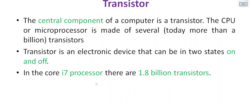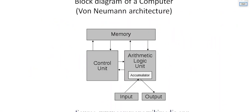There are a huge number of transistors in a computer's CPU. For example, an i7 processor has approximately 1.8 billion transistors. This is the block diagram of a computer — the Von Neumann architecture, taken as a reference. It is called a block diagram because the components of a computer are represented using blocks. All modern-day computers are based on this Von Neumann architecture.